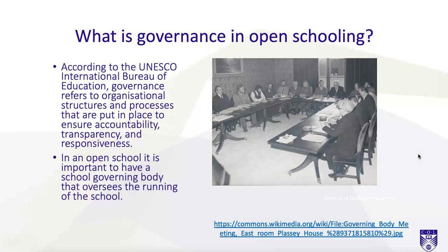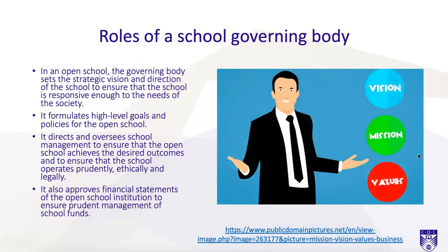The governing body sets the strategic vision and direction of the open school to ensure that the school is responsive enough to the needs of society. It formulates high-level goals and policies for the open school. It also directs and oversees school management to ensure that the open school achieves the desired outcomes and that the school operates prudently, ethically, and legally.